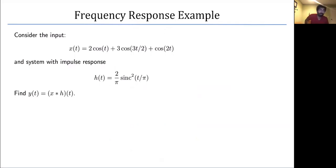Here's an example. Given an input X of t equal to a summation of three cosines, passed through a system with impulse response sinc squared of t over pi, what is the output? Rather than convolving X of t and H of t directly, we can use Fourier transforms.